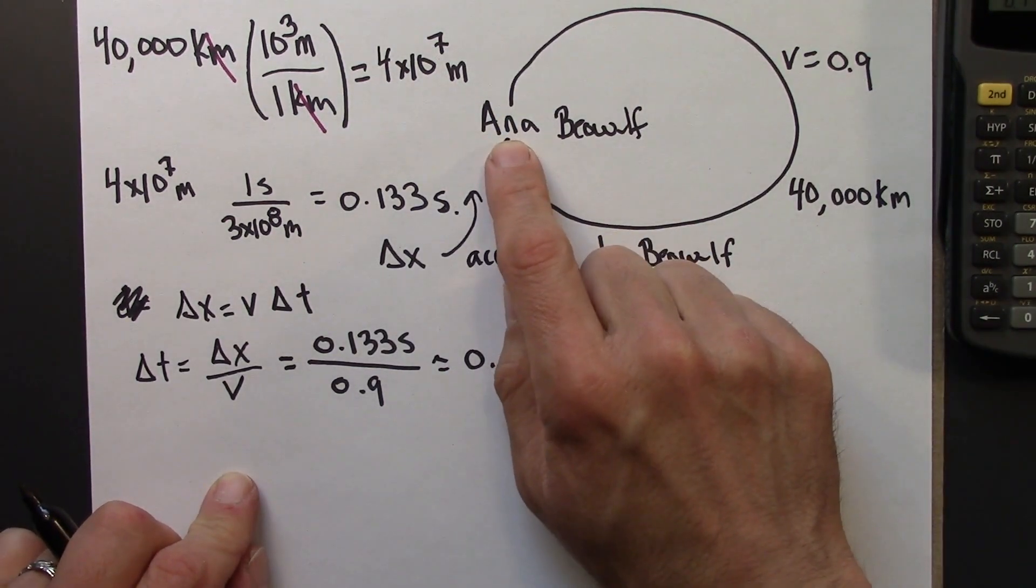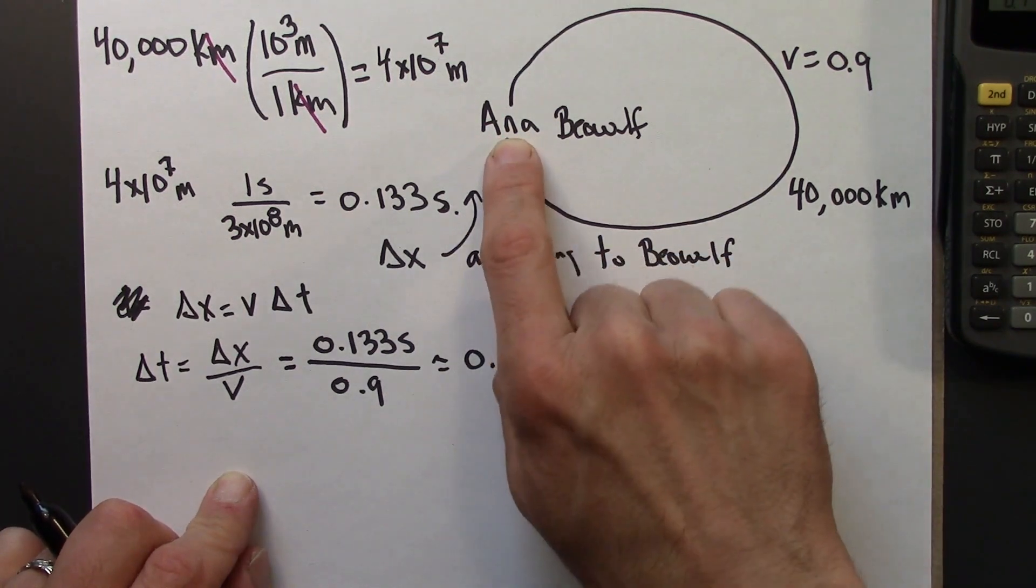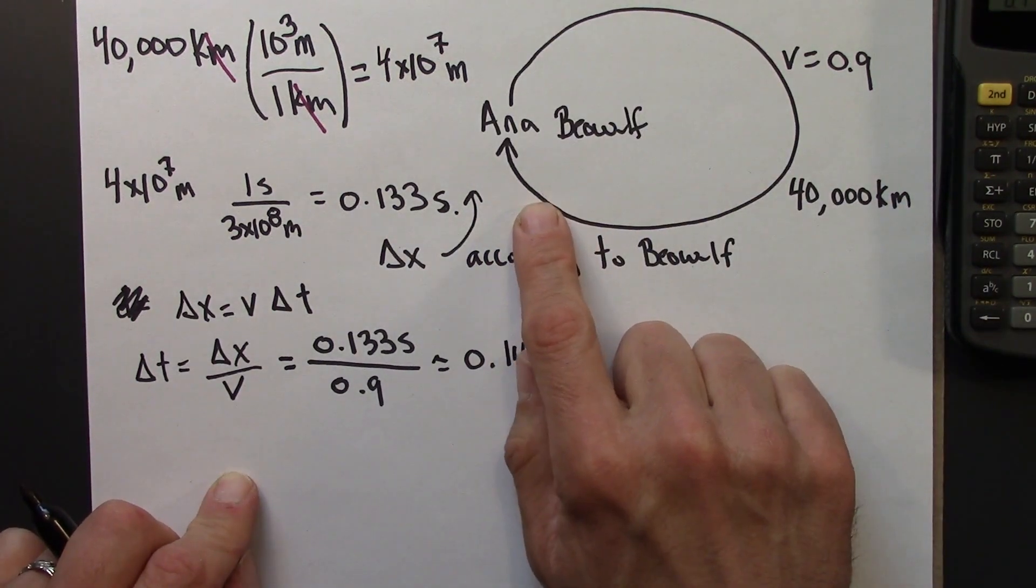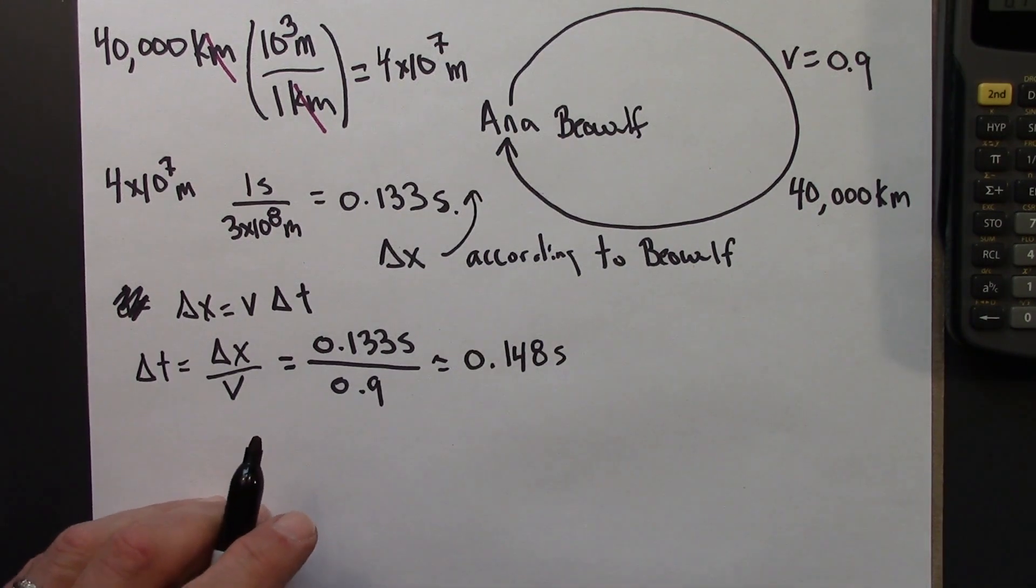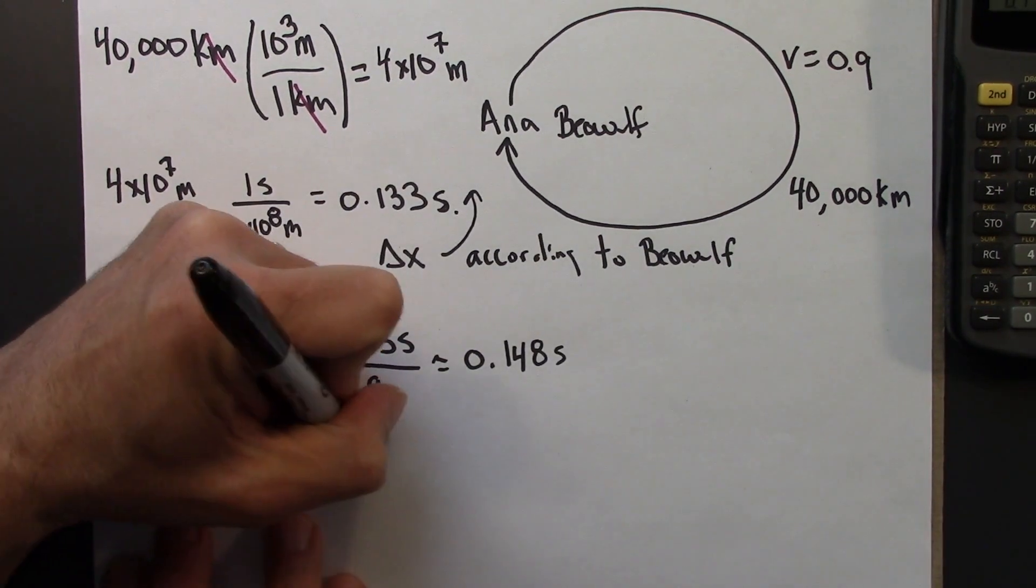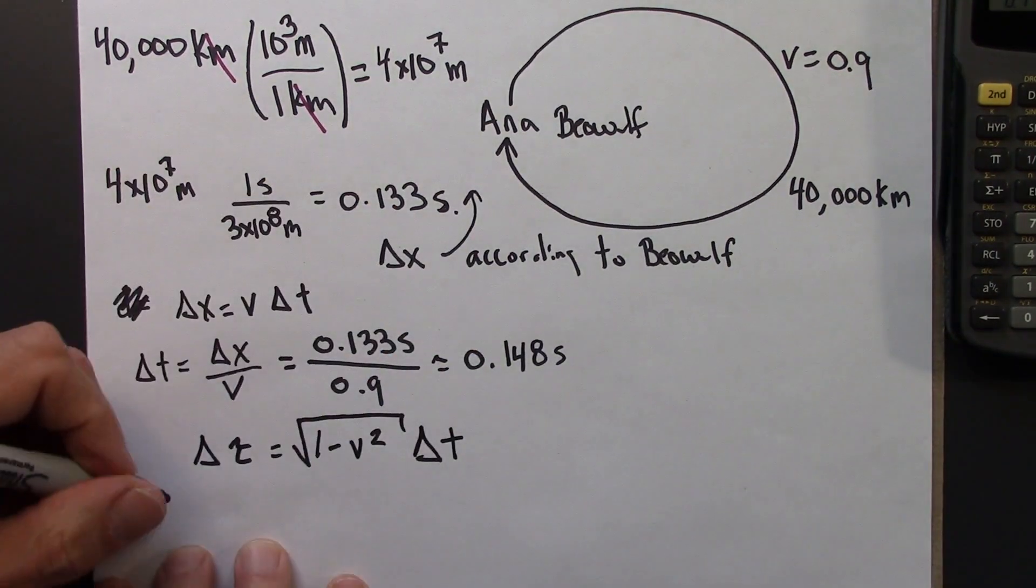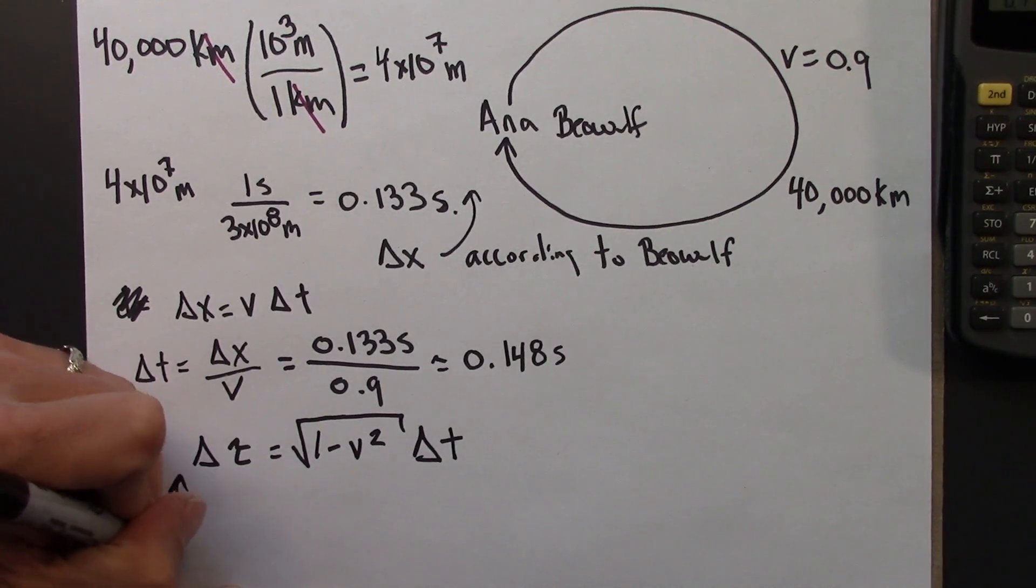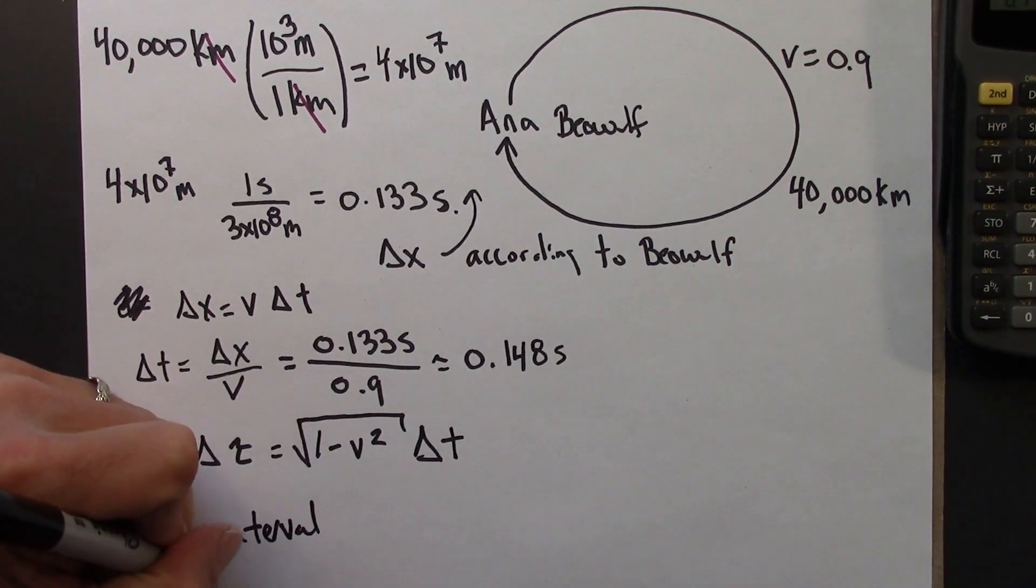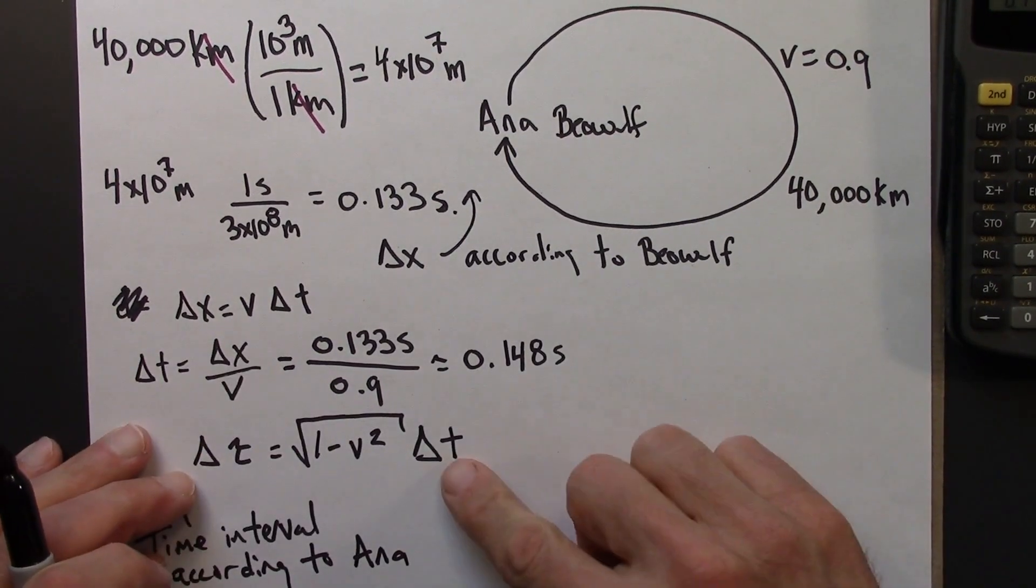But what about Ana? Ana is experiencing a proper time. Ana is present at both events, arrival and departure. But her clock is most definitely not inertial because she's going in a big circle, it's not constant velocity. But her speed is constant, so that means we can use this formula. This will be the time interval according to Ana.